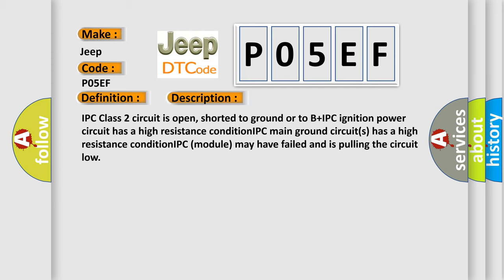IPC class 2 circuit is open, shorted to ground or to B plus IPC ignition power circuit has a high resistance condition. IPC main ground circuits has a high resistance condition. IPC module may have failed and is pulling the circuit low.